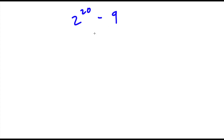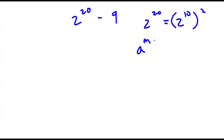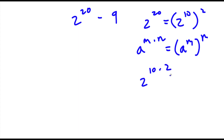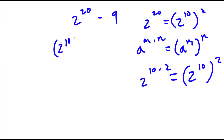Alright, so we have 2 to the power of 20 minus 9. Now 2 to the power of 20 is the same thing as 2 to the power of 10, squared. Because if I have something in the form a to the power of m times n, this is the same thing as a to the power of m, to the power of n. In this case, 2 to the power of 20 is the same as 2 to the power of 10 times 2.